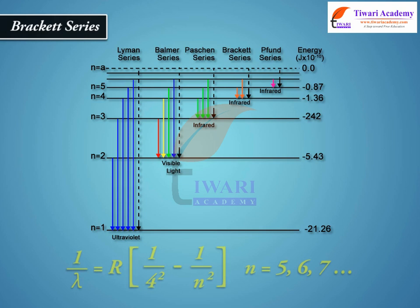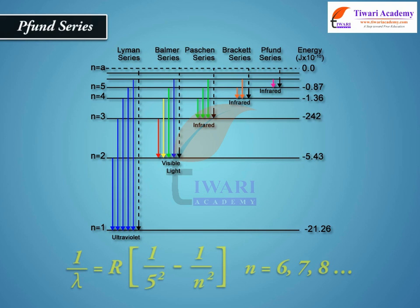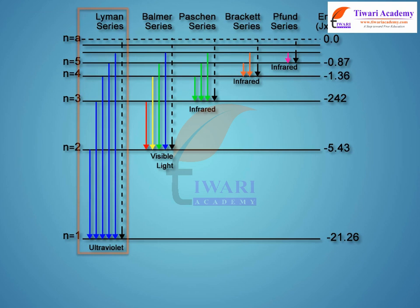The Pfund series formula is: 1/λ = R(1/4² − 1/n²), n = 5, 6, 7, and so on. The Paschen series formula is: 1/λ = R(1/5² − 1/n²), n = 6, 7, 8, and so on. The Lyman series lies in the ultraviolet region, and the Paschen, Brackett, and Pfund series are in the infrared region.